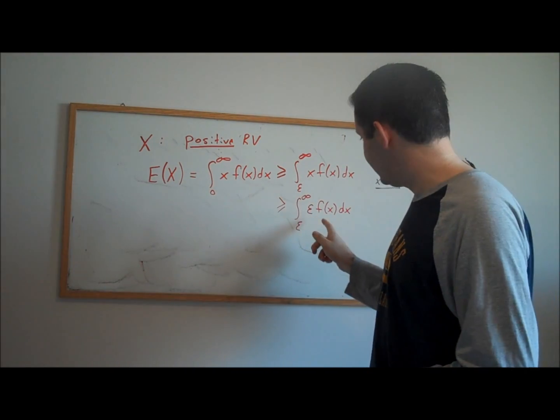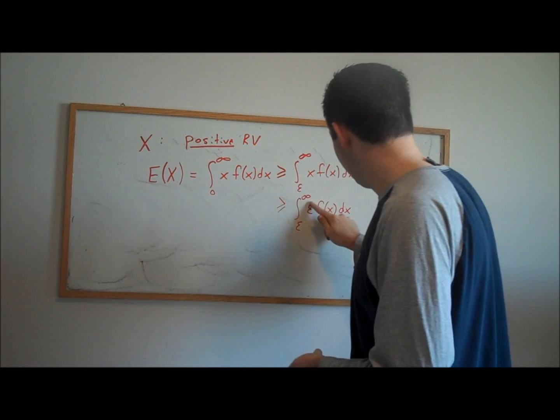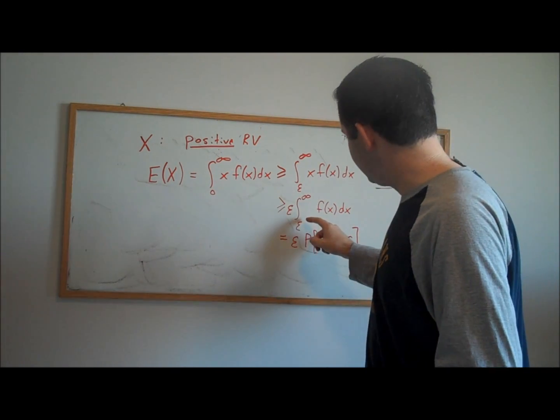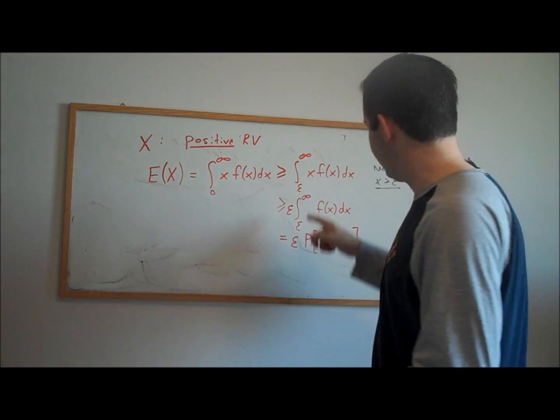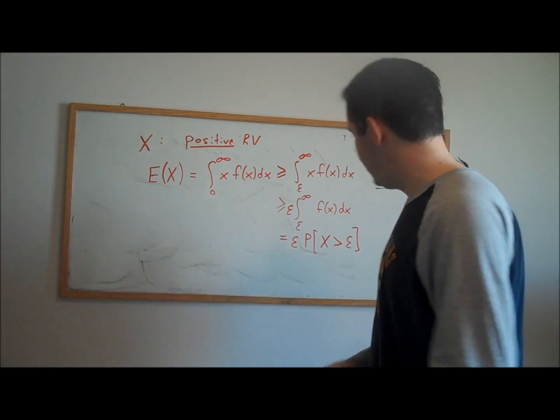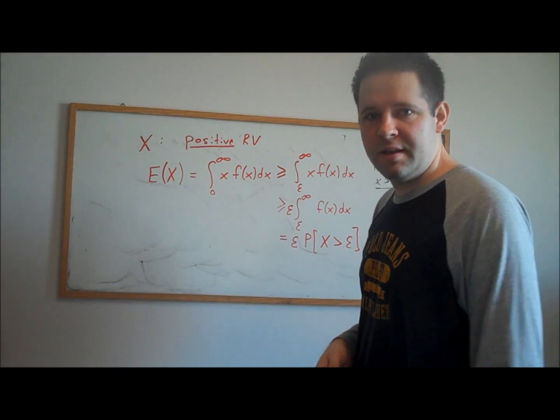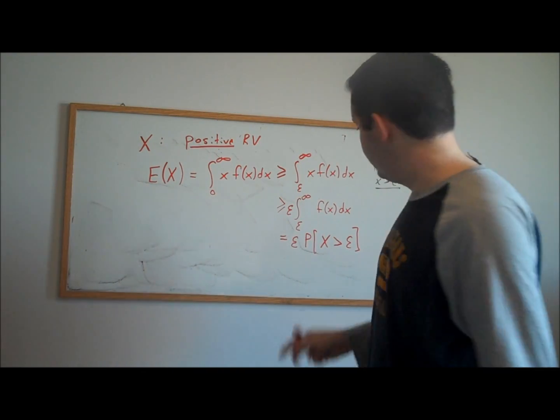This epsilon is just a constant, so we can bring it outside of the integral. We're integrating for every X that's bigger than epsilon, we're integrating over the density. And so that gives us the probability that X is bigger than epsilon.